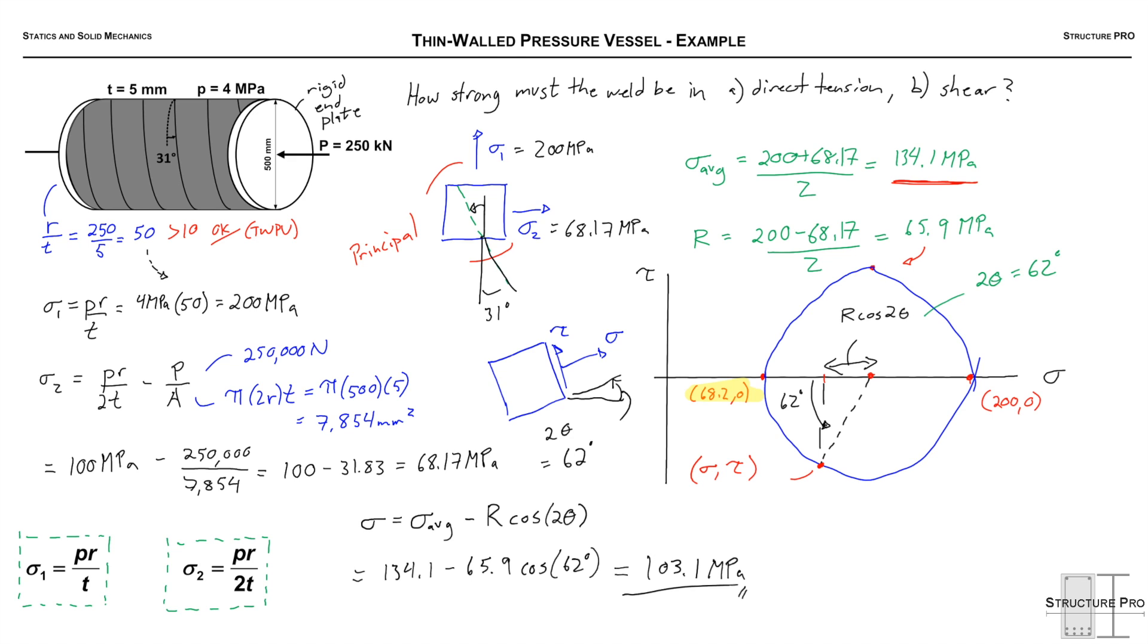Now does that make sense? If we look at the Mohr's circle it's between the sigma average and the sigma min that we had. So yeah that works right there. Let's do the same thing for the shear stress. Tau is R times sine 2 theta okay so the cos is for the sigmas or the normal stress. Sines are used for the shear stress. So we can multiply that out. R times sine 2 theta, 65.9 times sine 62 is 58.2 MPa.